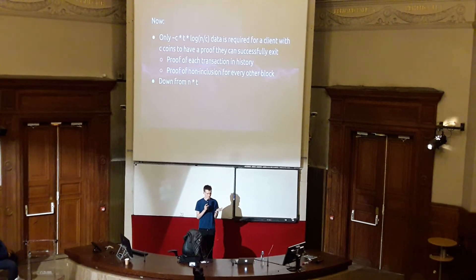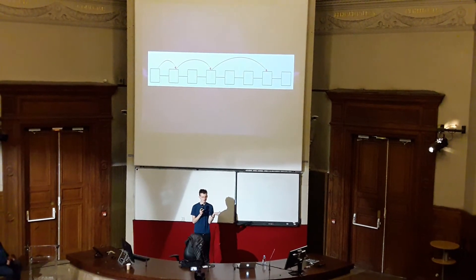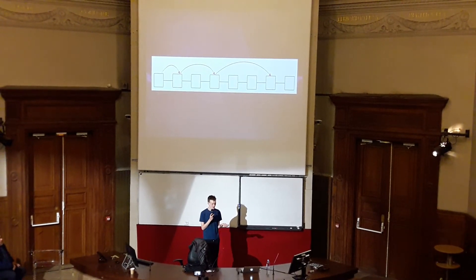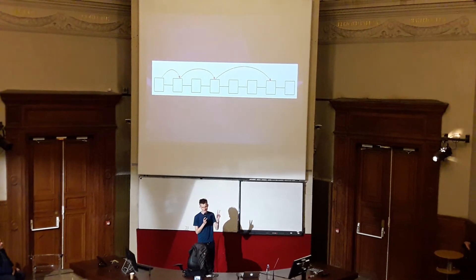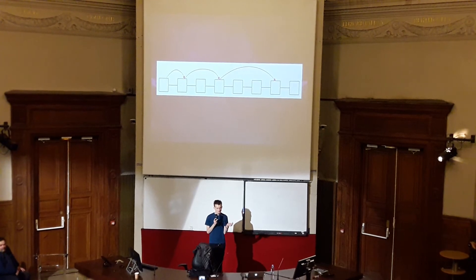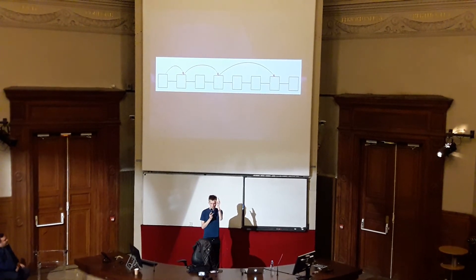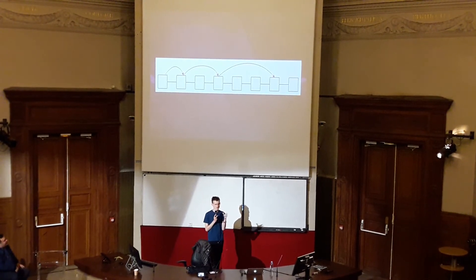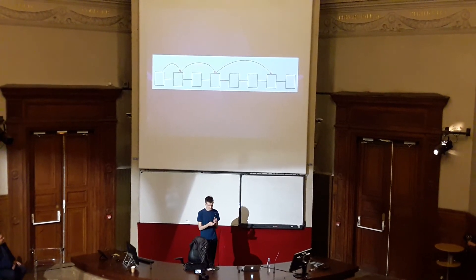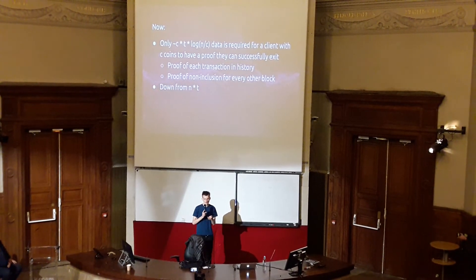For every single block in the plasma chain, if in that block there was a transaction that spent the coin or transferred the owner, then you want a proof that that coin is there. You need a proof that this history forms a chain that goes all the way back to whenever the coin was deposited. And for every block in which that particular coin is not spent, you just need a proof of non-inclusion — basically just a Merkle proof pointing to that same index in the tree, where at that particular index in the Merkle tree, you just have empty data. So, log N per block — that's basically all that an individual user needs to care about.